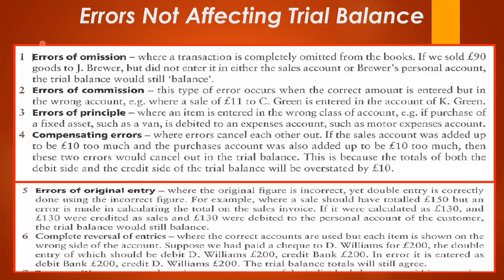Today's presentation focuses on errors not affecting the trial balance. The first kind is the error of omission — this is where a transaction is completely omitted from the books. For instance, if we sold $90 of goods to J. Brewer but did not enter it in either the sales account or in Brewer's personal account, the trial balance would still balance because we are missing both the debit and the credit for $90.